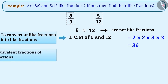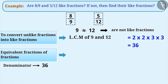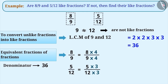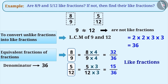After finding the LCM, we find the equivalent fractions for both fractions in which the denominator will be equal to the LCM. For this, we will multiply the numerator and denominator of eight by nine by four, and the numerator and denominator of five by twelve by three. Thus, we get the equivalent fraction of eight by nine as thirty-two by thirty-six, and the equivalent fraction of five by twelve as fifteen by thirty-six. Since the denominators of both these fractions are equal, we have converted eight by nine and five by twelve into like fractions thirty-two by thirty-six and fifteen by thirty-six respectively.